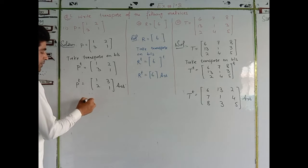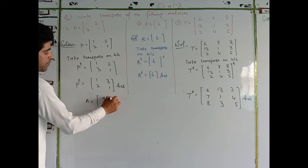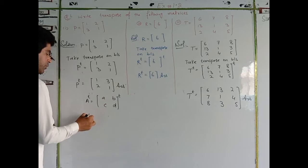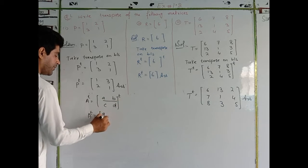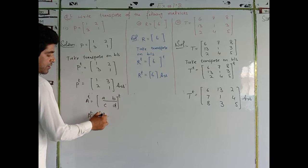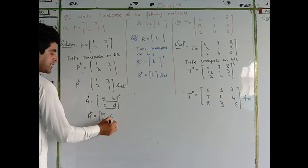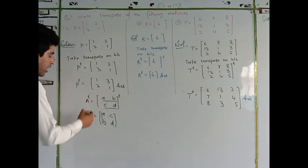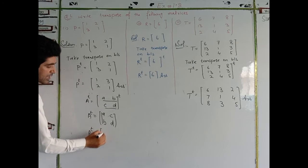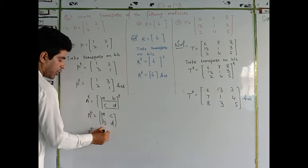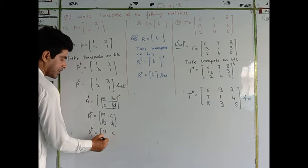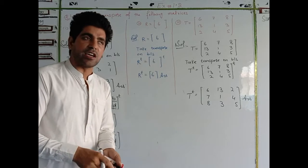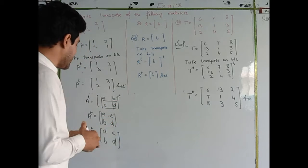We have matrix A equal to [a, b; c, d]. If we take the transpose, the first row is a, b and the second row is c, d. When we transpose, the first row becomes the first column and the second row becomes the second column. So the transpose gives us [a, c; b, d]. We change row to column — that is the transpose.